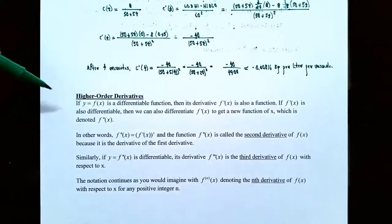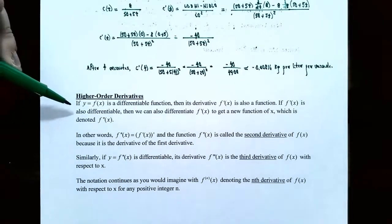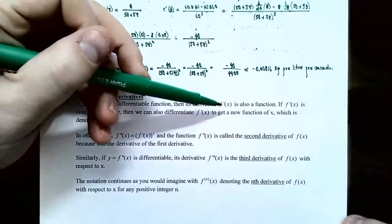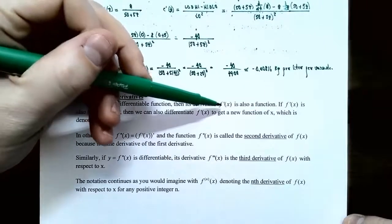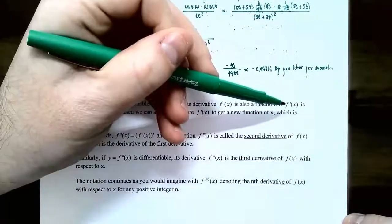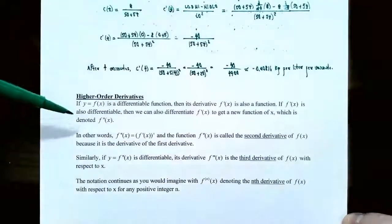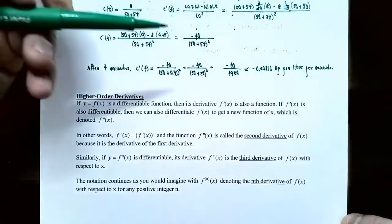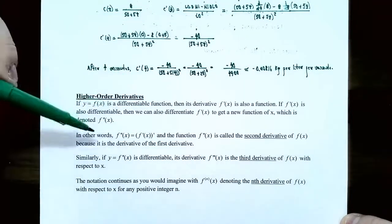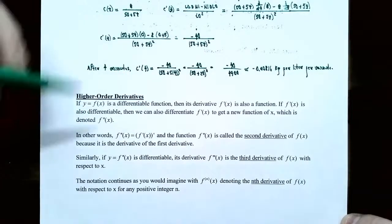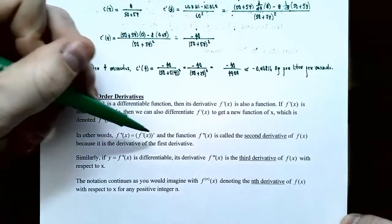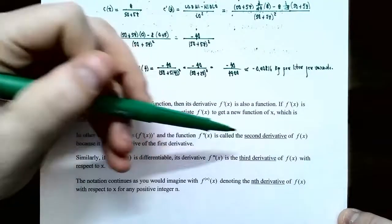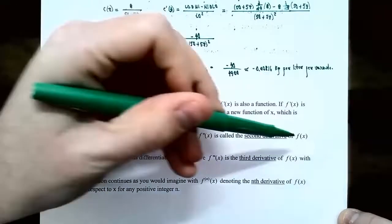One more thing to cover in this video: higher order derivatives. If y equals f of x is differentiable, its derivative is f prime of x, which is itself a function. If f prime of x is also differentiable, you can differentiate it again to get f double prime of x — the second derivative of the original function. Likewise, if the second derivative also has a derivative, taking it gives the third derivative, denoted f triple prime of x.